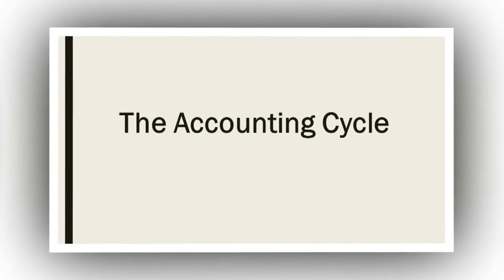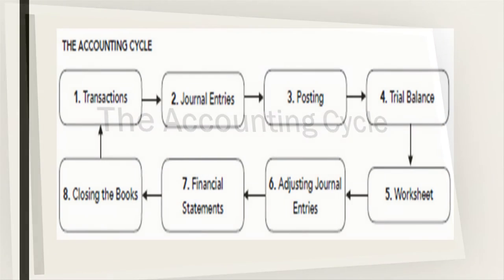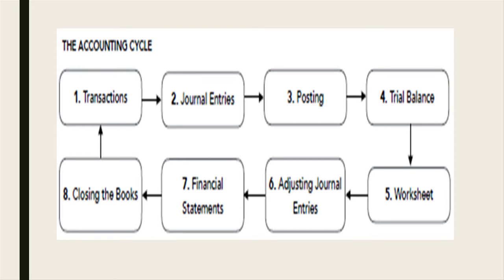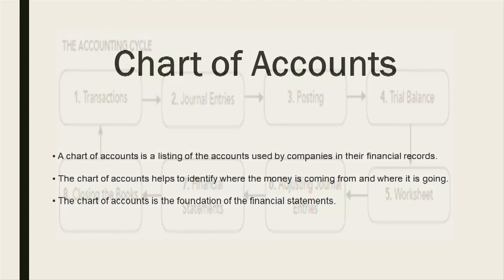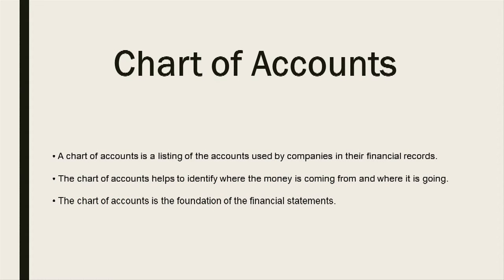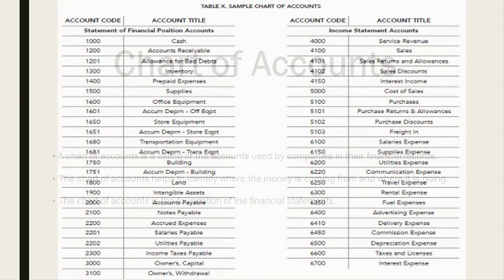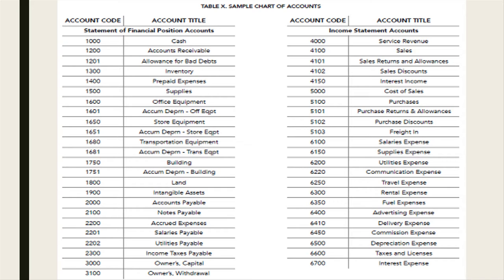Let us now proceed to the accounting cycle. The accounting cycle is made up of eight steps. The chart of accounts is a listing of the accounts used by companies in their financial records. It helps to identify where the money is coming from and where it is going. It is the foundation of the financial statements, and here is an example of the chart of accounts.